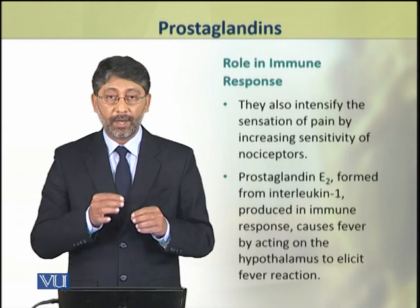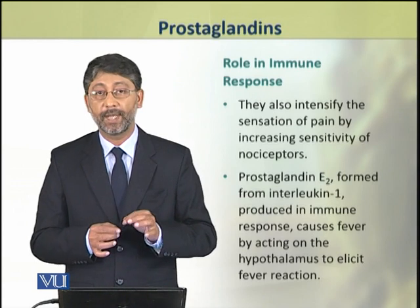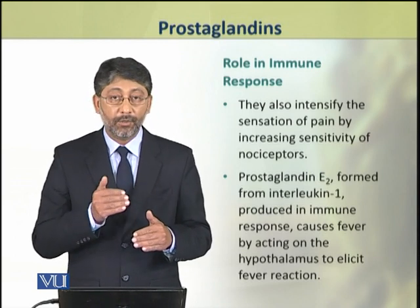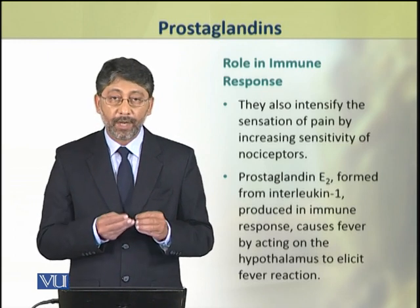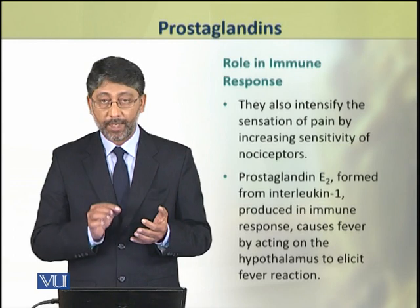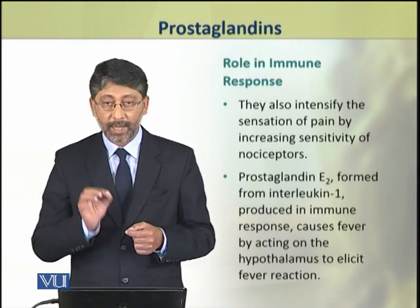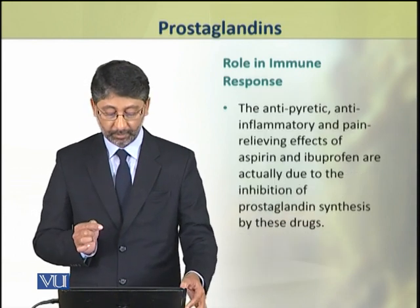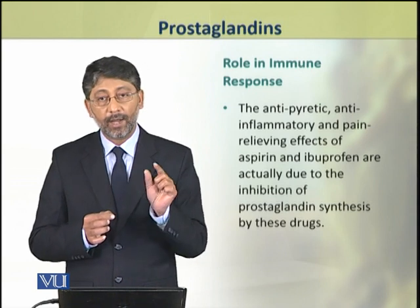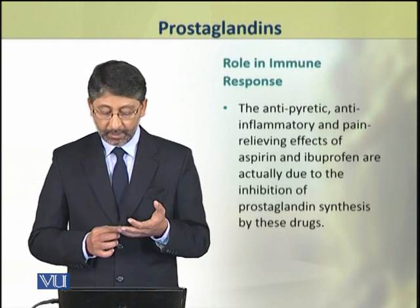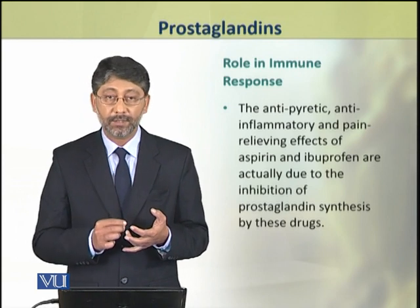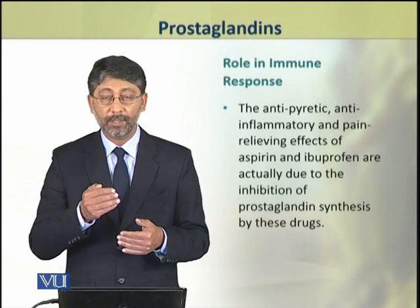Prostaglandins enhance pain by increasing the sensitivity of nociceptors, that is pain receptors. During immune response, a substance called interleukin-1 is produced, which leads to the production of a specific prostaglandin E2. This prostaglandin E2 plays an important role in fever reactions because it acts on the hypothalamus and produces a fever reaction. Here is a practically important point: aspirin is used as an antipyretic, anti-inflammatory, and pain-relieving agent because it blocks the synthesis of prostaglandins, and as a result, relief is obtained from all three of these symptoms.